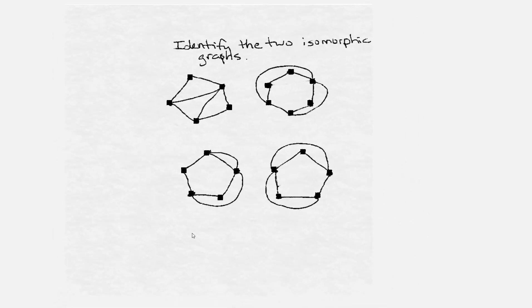Here we have four graphs and we're going to find a pair of them that are isomorphic. We're going to start the same way we did in the previous problem. We're going to look at the number of vertices.